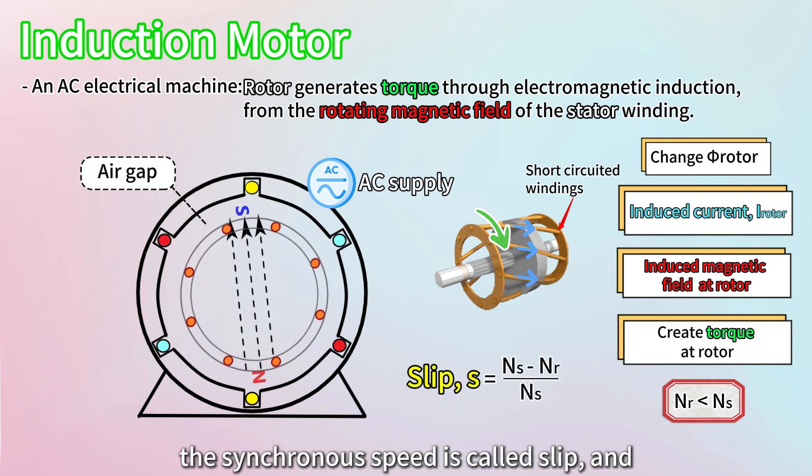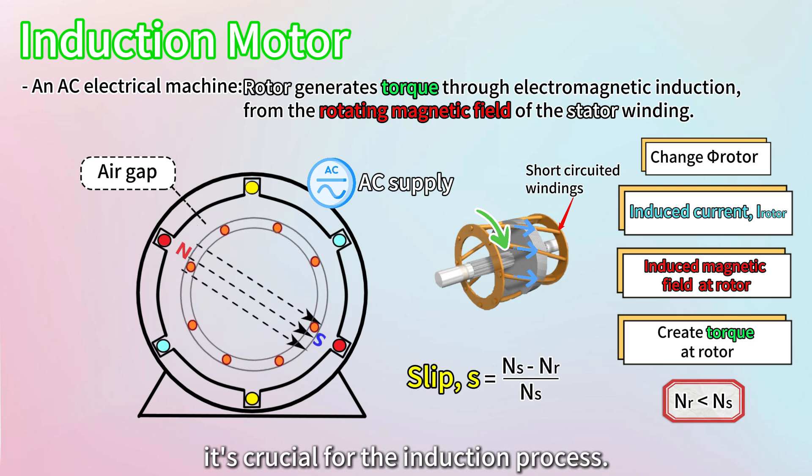The difference between the rotor speed and the synchronous speed is called slip, and it's crucial for the induction process.